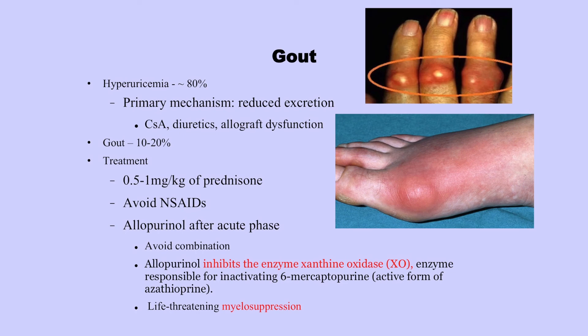Other metabolic problems include joint disease with gout. There is a high prevalence of hyperuricemia in this patient population, and some of them will develop gout as well. Treatment is prednisone — avoid non-steroidals. Remember, you should not combine allopurinol with azathioprine, because allopurinol inhibits xanthine oxidase, which is the primary enzyme responsible for inactivating 6-mercaptopurine. If you combine them, it can cause bone marrow suppression.